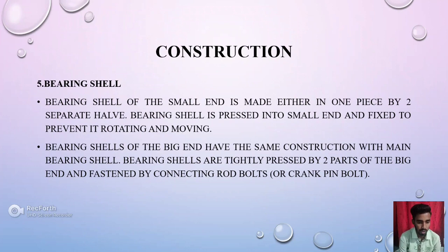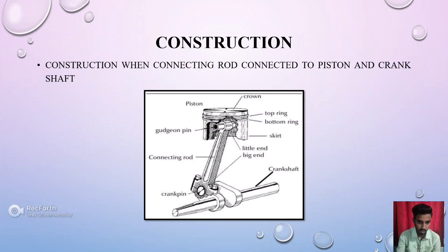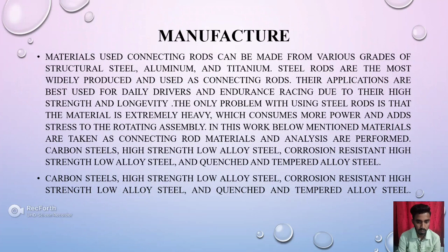Fifth is the bearing shell. The bearing shell of the small end is made either in one piece or in two separate halves. The bearing shell is pressed into the small end and fixed to prevent it from rotating and moving. This shows the construction when the connecting rod connects to the piston and crankshaft.